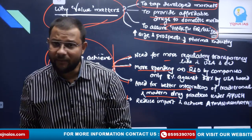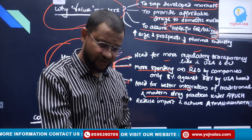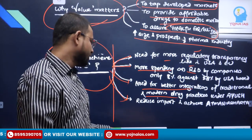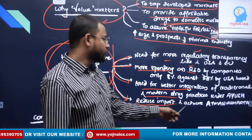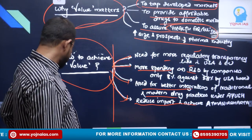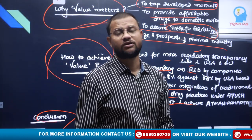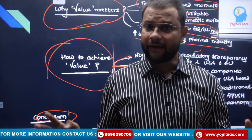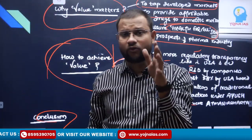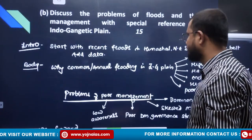Indian pharma needs to focus on Ayush, on allopathic research and development, proper and transparent regulation, reduce imports and achieve Atmanirbhar. In conclusion, have some optimistic note. I hope the volume-to-value structure is clear.